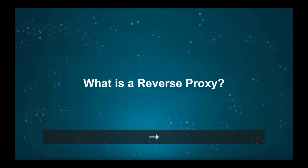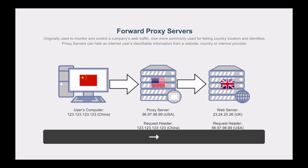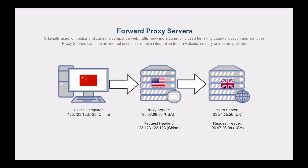So what exactly is a reverse proxy? First of all, let's have a look at what a forward proxy is. In this diagram we have a user who's currently based in China and they are trying to get access to a website based in the UK. Either to hide their identity or their location, they're going through a proxy server based in America. The proxy server can see the identity of the Chinese user, but as it passes on the traffic to the UK server, the UK server can only see the identity of the US proxy, and therefore none of the information about the user gets passed on to the end source.